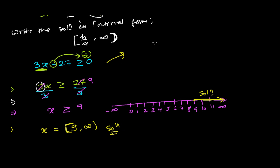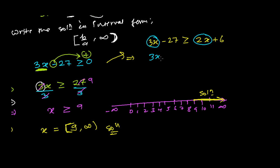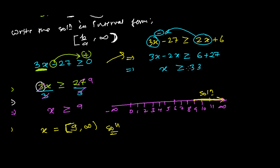If we have more variables, for example 3X − 27 ≥ 2X + 6, then by the first rule we collect variable terms to one side: 3X − 2X ≥ 6 + 27, giving X ≥ 33. Since the coefficient of X is 1, there is no need to divide further — dividing by 1 doesn't change anything.